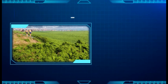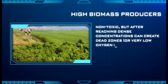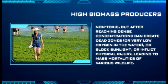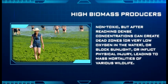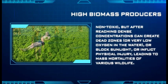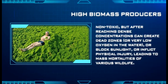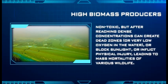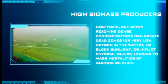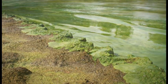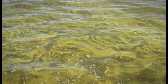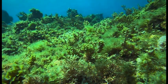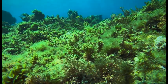The second group are high biomass producers, which are non-toxic. After reaching dense concentrations, they can create dead zones, which can block the sunlight, inflict physical injury, or lower the level of oxygen in the water, leading to mass mortalities of various wildlife. Some HABs have characteristics of both groups. HABs can also change an ecosystem dramatically by dominating and out-competing the natural phytoplankton population and altering the food web dynamics as a result.